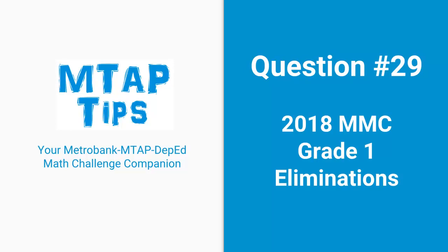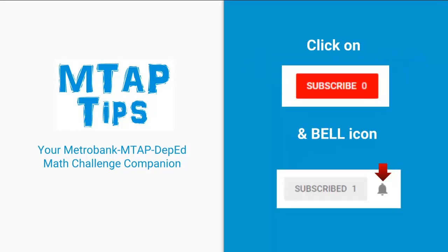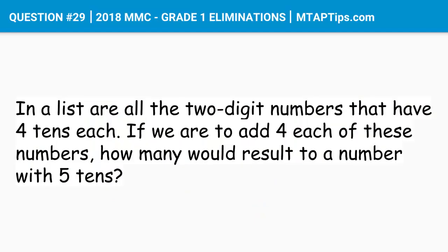Question number 29 for 2018 MMC Grade 1 Eliminations. For more MTAP tips, don't forget to subscribe and click on the bell icon so you'll get notifications when we upload new videos. In a list are all two-digit numbers that have four tens each. If we are to add 4 to each of these numbers, how many would result in a number with 5 tens?